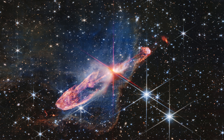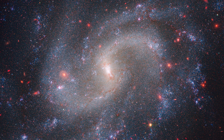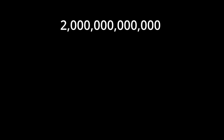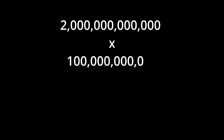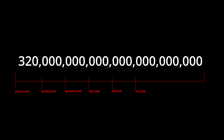It is estimated that the observable universe contains two trillion galaxies, with each galaxy containing an estimated 100 billion stars. Each star has an average of 1.6 planets. That's two trillion multiplied by 100 billion, multiplied by 1.6. That means there are 326 trillion planets in the observable universe — a number so unfathomably large, it's difficult to even begin to comprehend its magnitude.